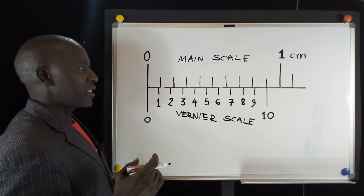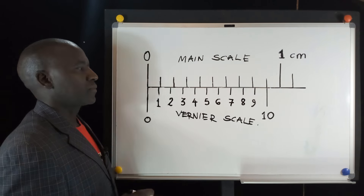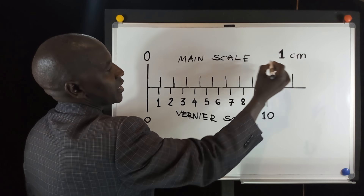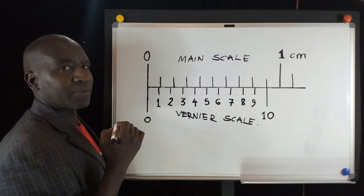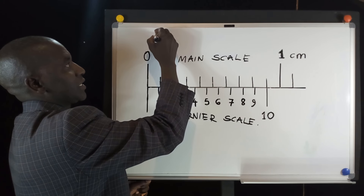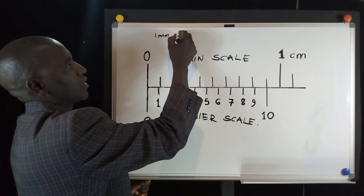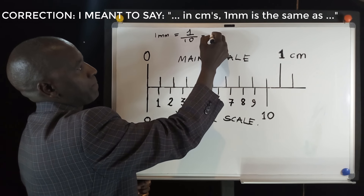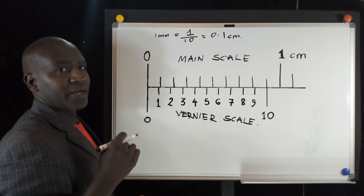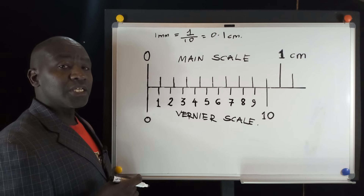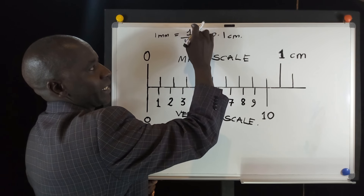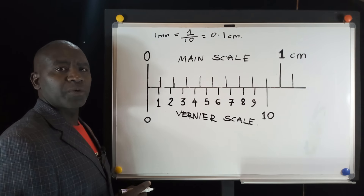Let's briefly look at the main scale. The main scale is just like the scale you have on the meter rule. The meter rule is graduated in centimeters and millimeters. From here all the way to that point is a length of one centimeter. That one centimeter is divided into ten equal divisions, and one division is equal to one millimeter. In meters, one millimeter is the same as 0.1 of a centimeter. I divide one centimeter by ten divisions and find that one division is 0.1 centimeter.